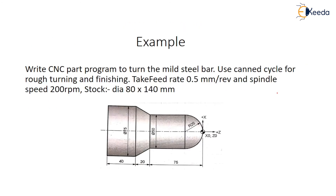The right-to-change part program: we turn the material bar and use canned cycles for rough turning and finishing. Take a feed rate of 0.5 mm per revolution and spindle speed 200 rpm. The billet diameter is 80 by 140. Here you observe it is having dimensions like this. You have to choose the origin at X0, Z0, and different lengths are available. According to this length, we have to do the machining operation.